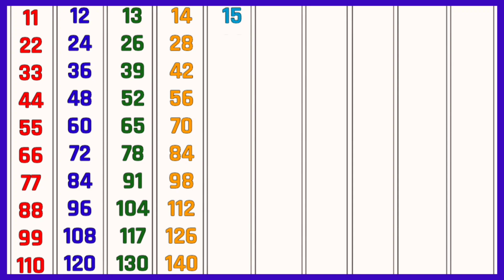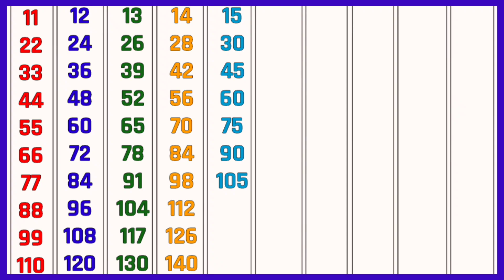Table of 15: 15 ones are 15, 15 twos are 30, 15 threes are 45, 15 fours are 60, 15 fives are 75, 15 sixes are 90, 15 sevens are 105, 15 eights are 120, 15 nines are 135, 15 tens are 150.